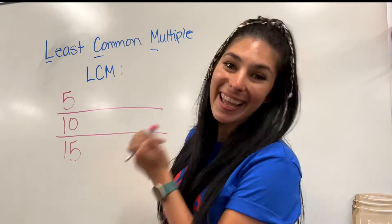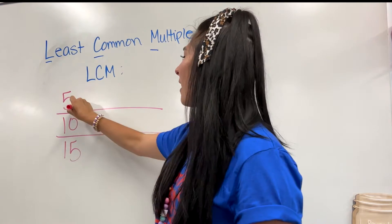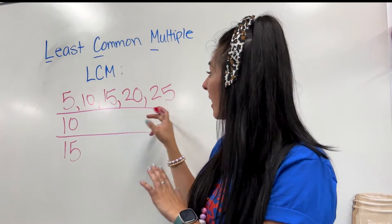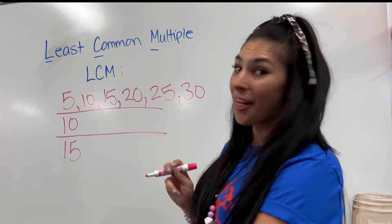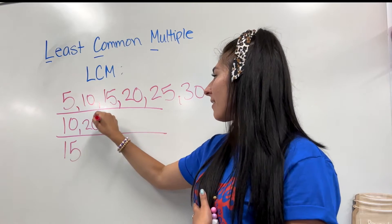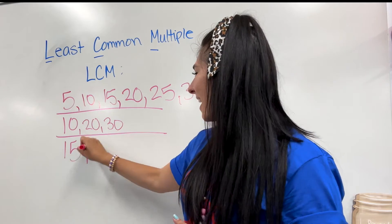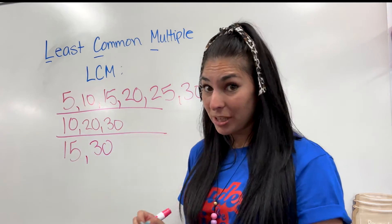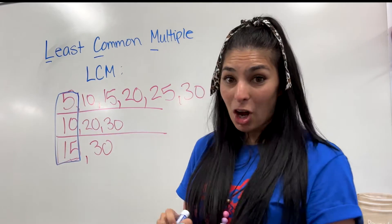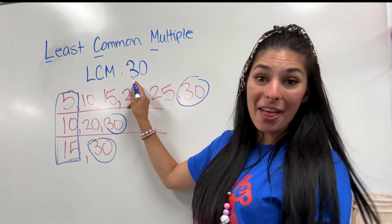Let's do another one. I have 5, 10, and 15. Skip counting by 5s: 5, 10 — those two have 10 in common — 15, 20, 25, 30. Skip counting by 10s: 10, 20, 30. These two have 30. Does 15 have 30? 15 plus 15 is 30. So the least common multiple, the smallest number these three have in common, is 30.